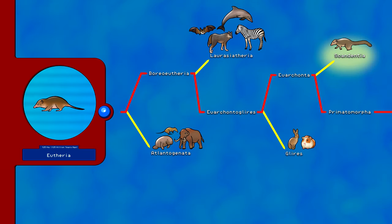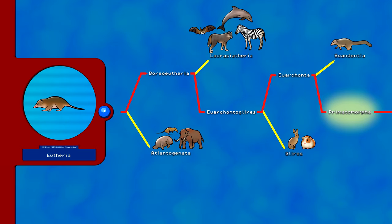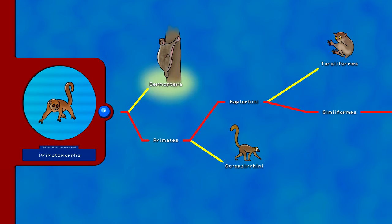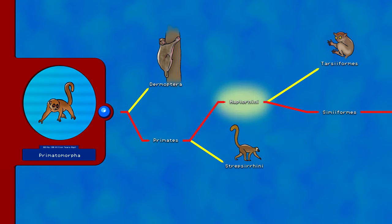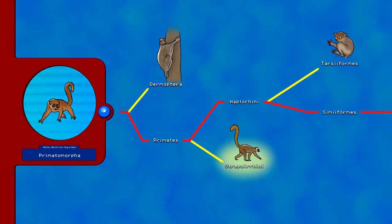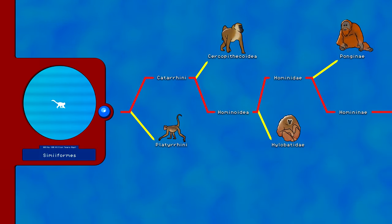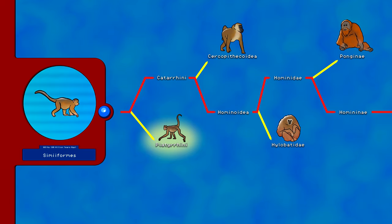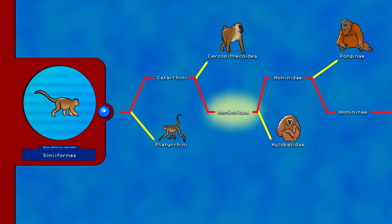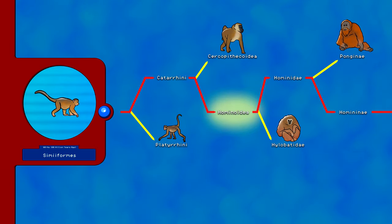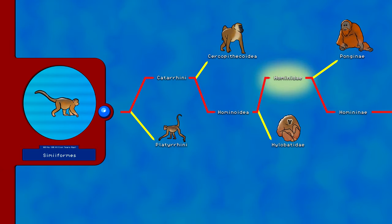Euarchontoglires includes Scandentia, the tree-shrews, and the Primatomorpha, which include primates and Dermoptera, or colugos. 79 million years ago, the order of primates was separated from colugos. Primates include both Haplorhini and Strepsirrhini, which includes lemurs and lorises. Haplorhini split 63 million years ago and includes Simiiformes and tarsiers. Simiiformes include Catarrhini and Platyrrhini, the New World monkeys. 35 million years ago, Catarrhini branched from Simiiformes and includes Hominoidea and Cercopithecoidea, the Old World monkeys. Now we've arrived at the superfamily Hominoidea — the apes — which split 25 million years ago and includes Hominidae and Hylobatidae, the gibbons.